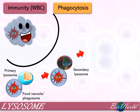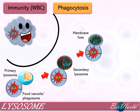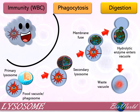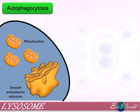Following this, the membrane of the vacuole will fuse with the membrane of the lysosome, and the hydrolytic enzymes inside the lysosome will begin to move into the vacuole. The enzymes will then digest the bacterium and in this way destroy it. What is left will be waste material inside the vacuole. Now that we've seen the role of the lysosome in phagocytosis, let's discuss its role in autophagocytosis.